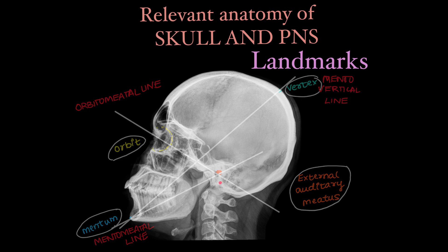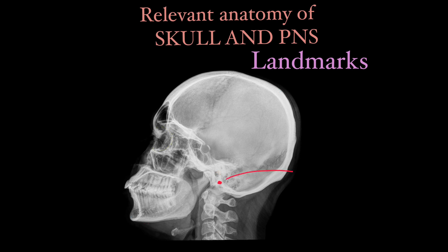A few important internal landmarks which we don't see externally are the basion, which is the tip of the clivus forming the anterior part of the foramen magnum, and opisthion, the part of the occipital bone forming the posterior part of the foramen magnum.